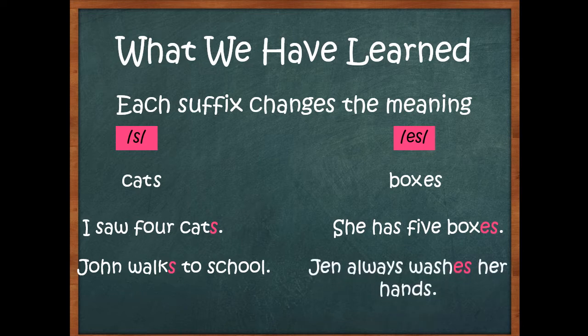We can make a plural like she has five boxes, but we can also do this: Jen always washes her hands. So these suffixes do two things. They can make something plural, and they can tell us what he or she does, what some other person does, or what it does.